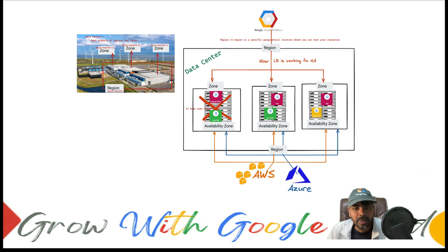This is all about regions. A region is a specific geographical location where you can host your resources. Think about and correlate regions and zones across the three major public clouds: AWS, Azure, and GCP. On the left-hand side, I've included an image showing a real example of regions and zones.